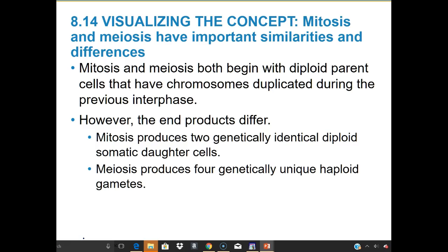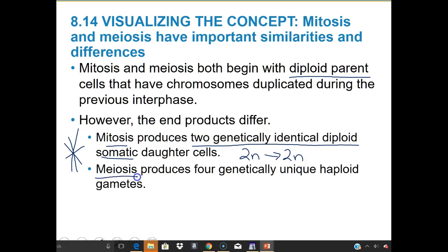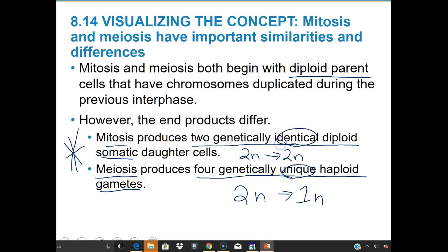Both mitosis and meiosis begin with a diploid parent with chromosomes duplicated during S phase of interphase. However, the end products are very different. Mitosis produces two genetically identical diploid somatic daughter cells — we start diploid and end diploid. Meiosis, however, produces four genetically unique haploid gametes — we go from 2N to 1N, and they're genetically unique versus the identical copies in mitosis.